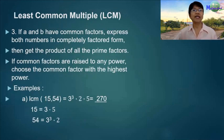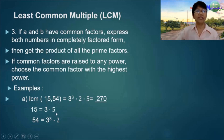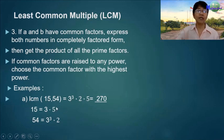Rule 3: if A and B have common factors, express both numbers in completely factored form and get the product of all the prime factors. If the common factors are raised to any power, choose the common factor with the highest power. Example: LCM of 15 and 54 — since 15 is 3 times 5 and 54 is 3-cubed times 2, the common factor with the highest power is 3-cubed. Multiply by the remaining factors 2 and 5 to get 270.